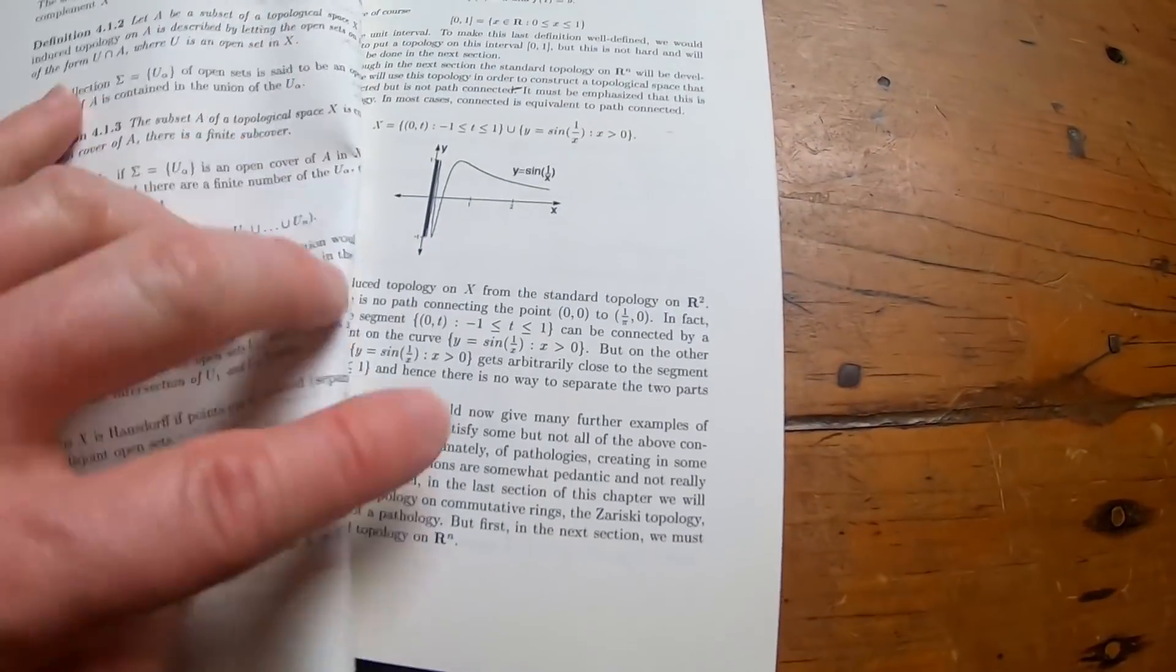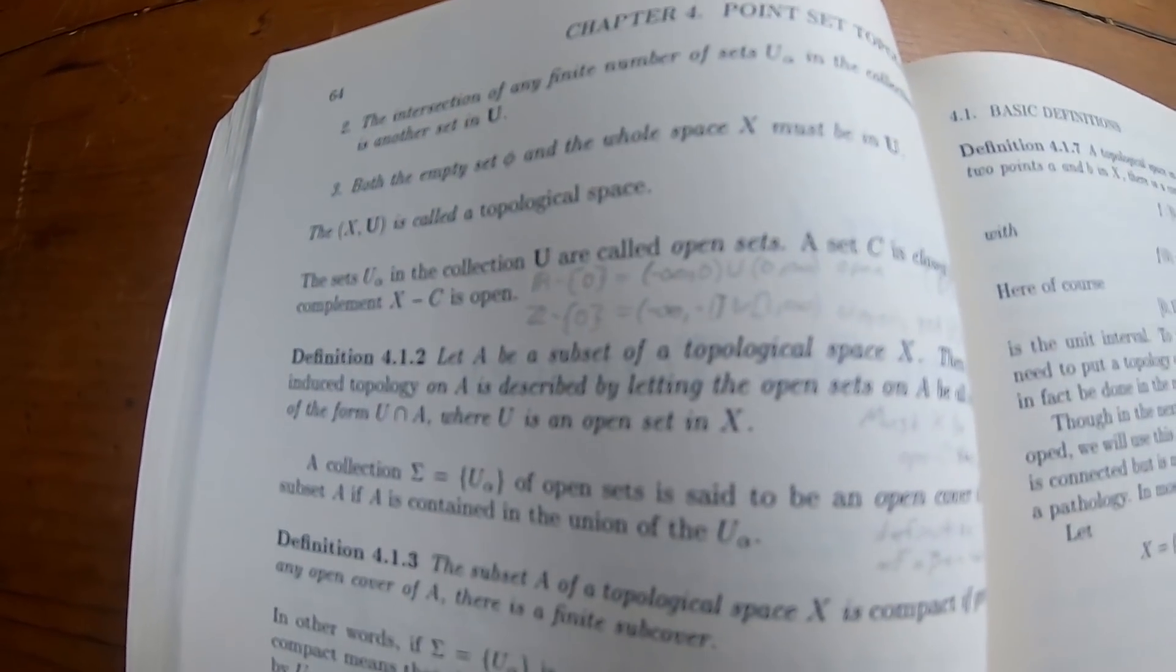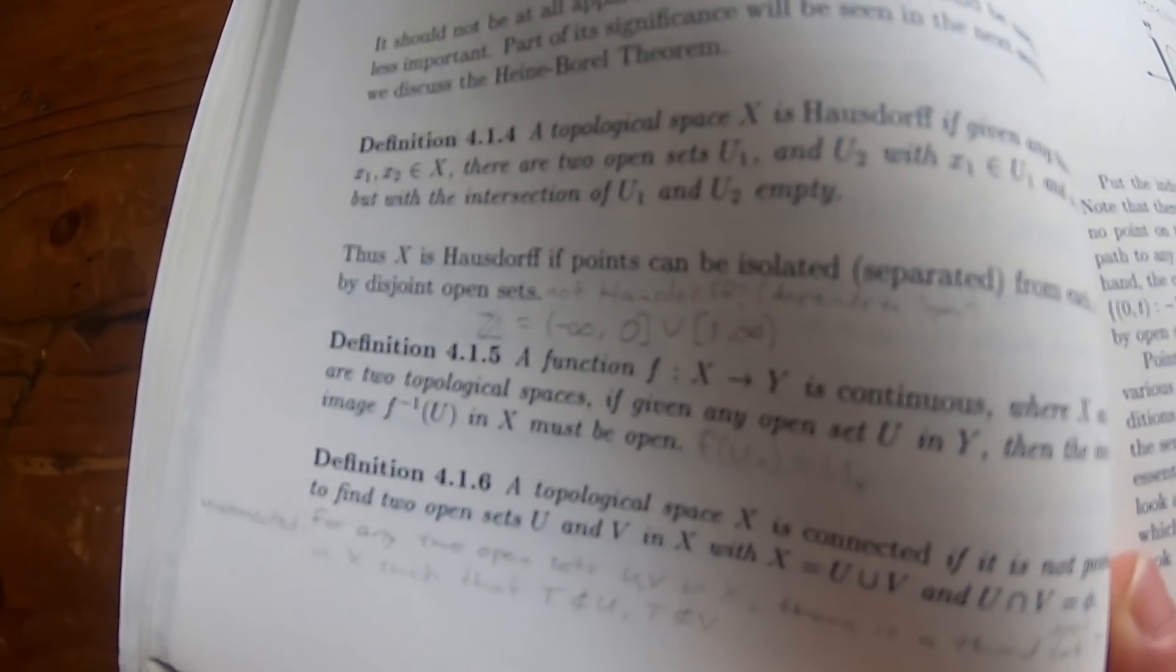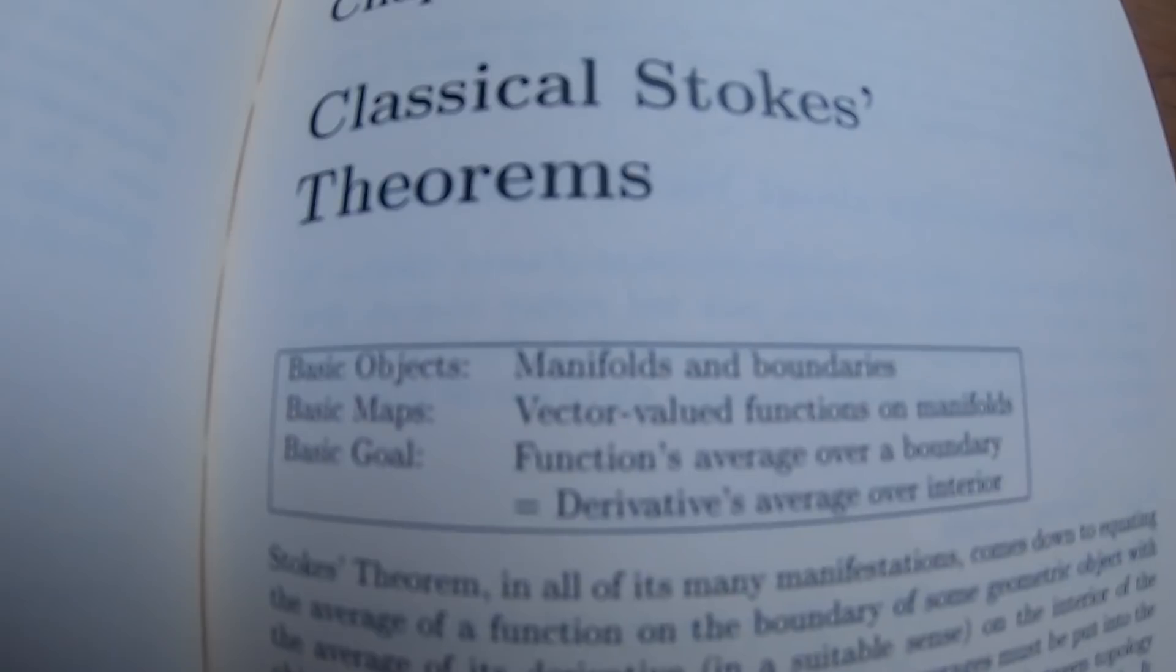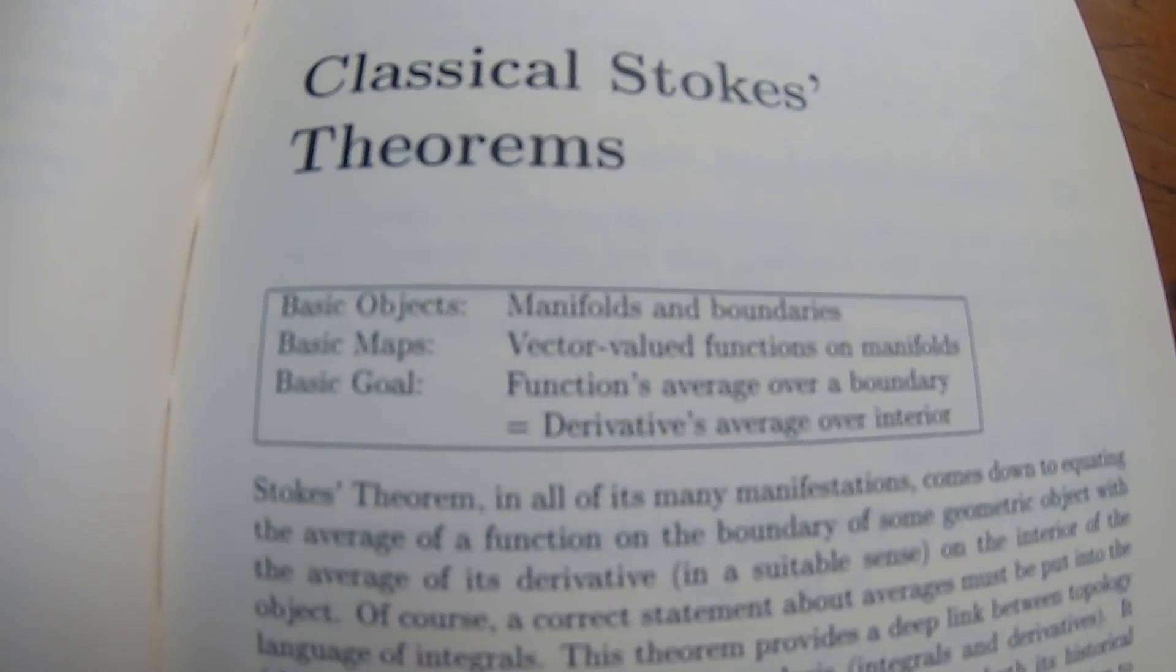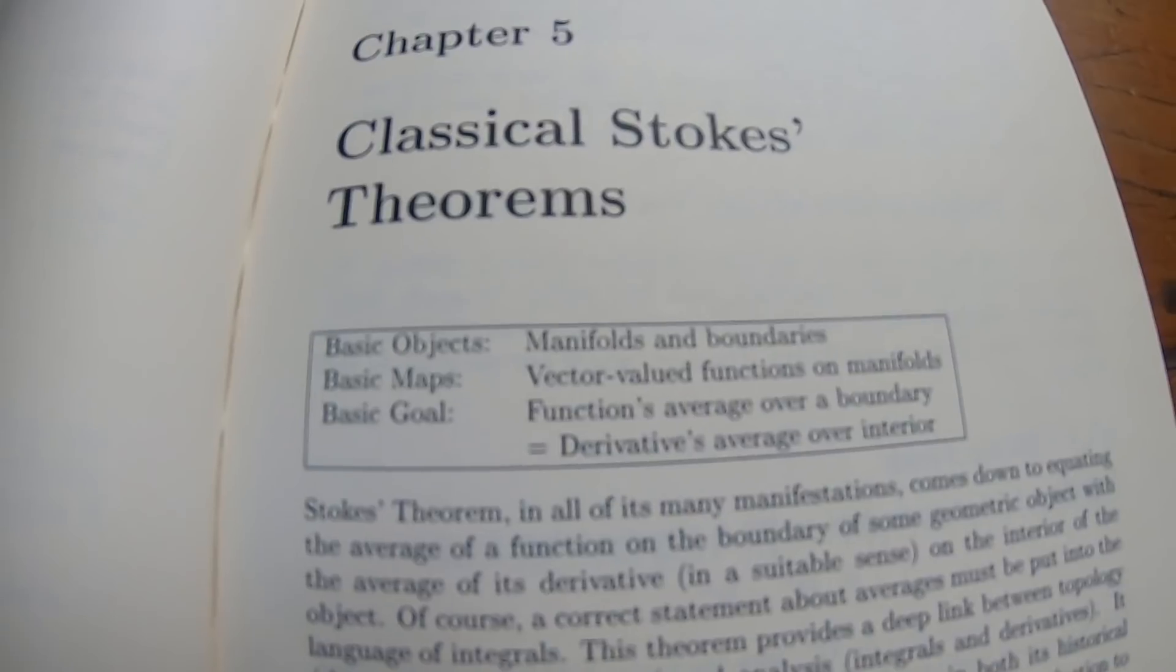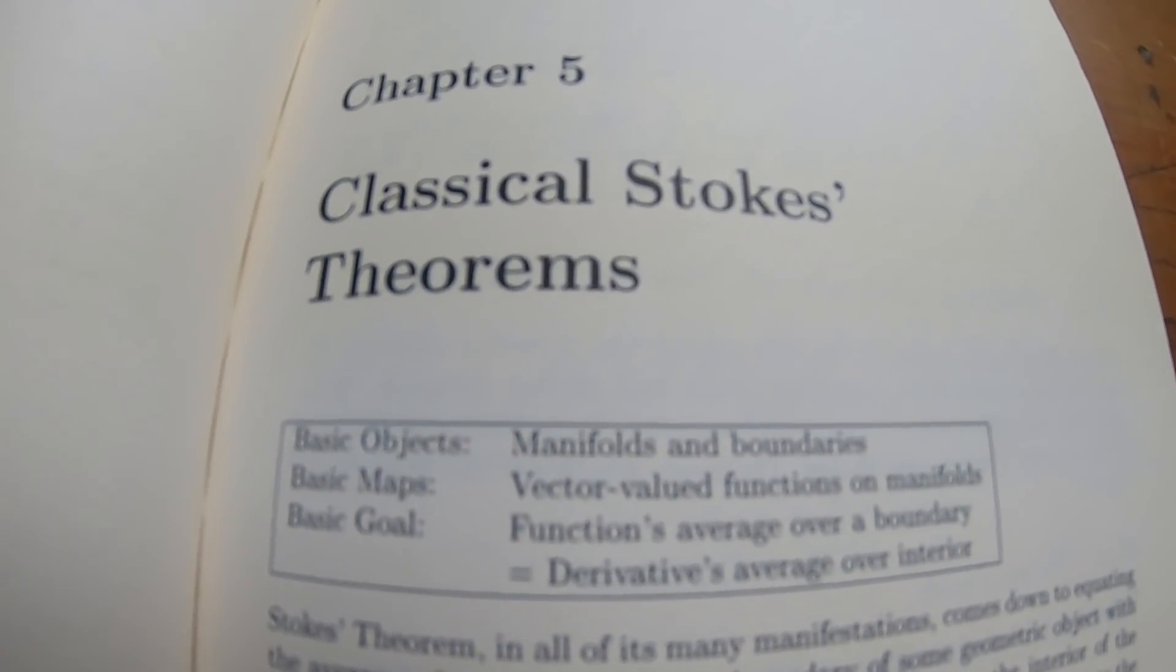And then the other person, apparently, who owned the book before me was working through it. Oh, they have more writing here, too. Pretty interesting stuff. Classical Stokes theorem. So the basic objects are manifolds and boundaries. The basic maps are vector-valued functions on manifolds. And the basic goal is that the functions average over a boundary is the same as the derivatives average over the interior.